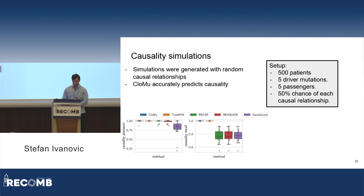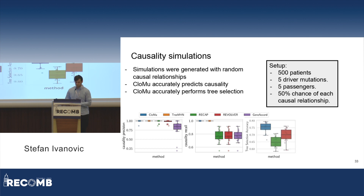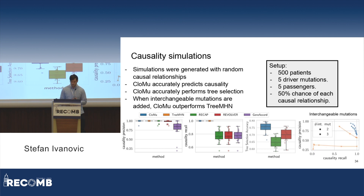On to results. First, simulations with causal relationships: 500 patients, five driver mutations, five passenger mutations, and a 50% probability of a causal relationship between each pair of driver mutations. CLOMU very accurately predicts causality in this case. TreeMHN also very accurately predicts causality, but other methods do not. Additionally, CLOMU performs tree selection better than any existing method. There are additional simulations with interchangeable mutations added in addition to causal relationships, and in that case CLOMU outperforms TreeMHN.